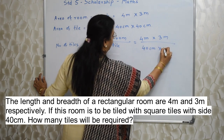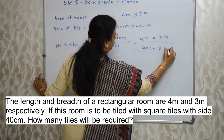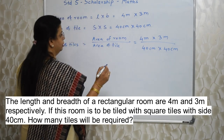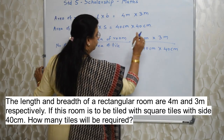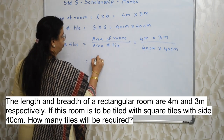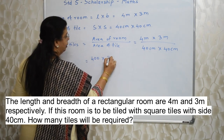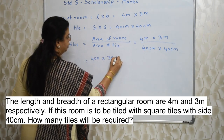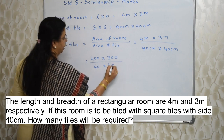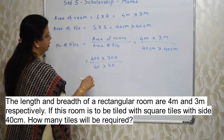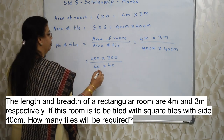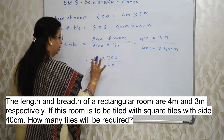On top there are meters, and in the denominator there are centimeters. So we need to convert the meters into centimeters. So 4 meter is 400 cm, 3 meter is 300 cm. This is 40 cm into 40 cm. Now everything is centimeters, so no need to write meter or centimeter.